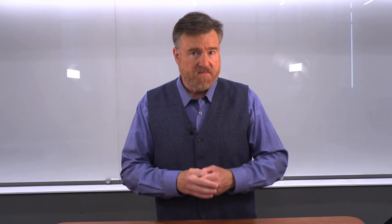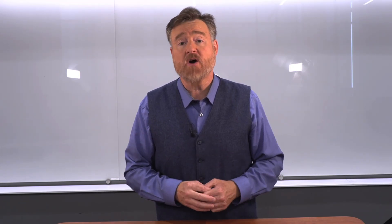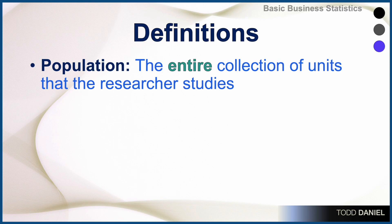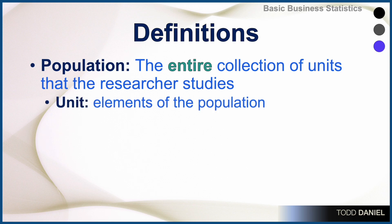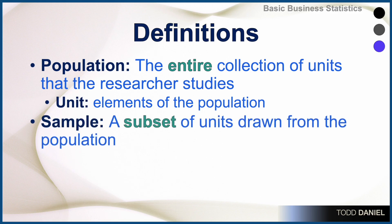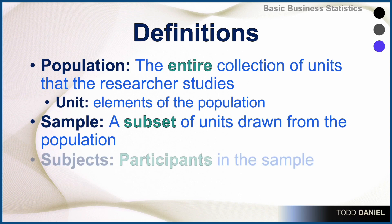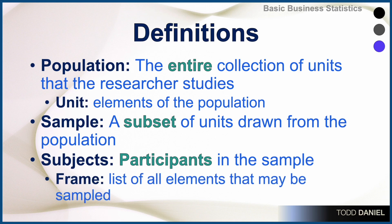Let's review some definitions we are going to need as we talk about sampling and sampling methodology. The first is population: the entire collection of units that the researcher studies. A unit is an element of the population, also known as a subject or a participant. Your sample is a subset of units that have been drawn from the population. Subjects are participants in the sample, also known as units. And the frame is a list of all of the elements in the population that may be sampled.